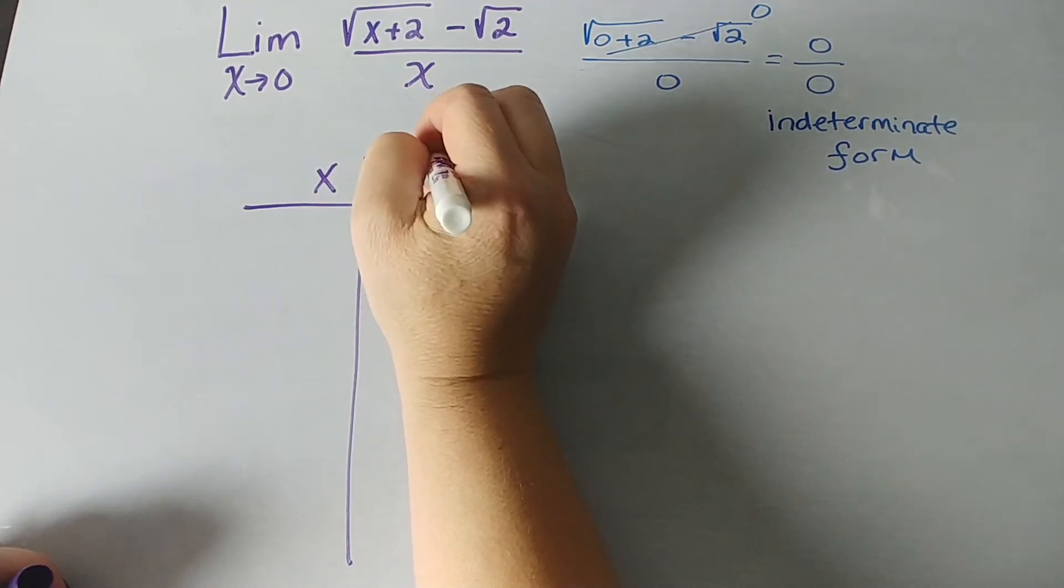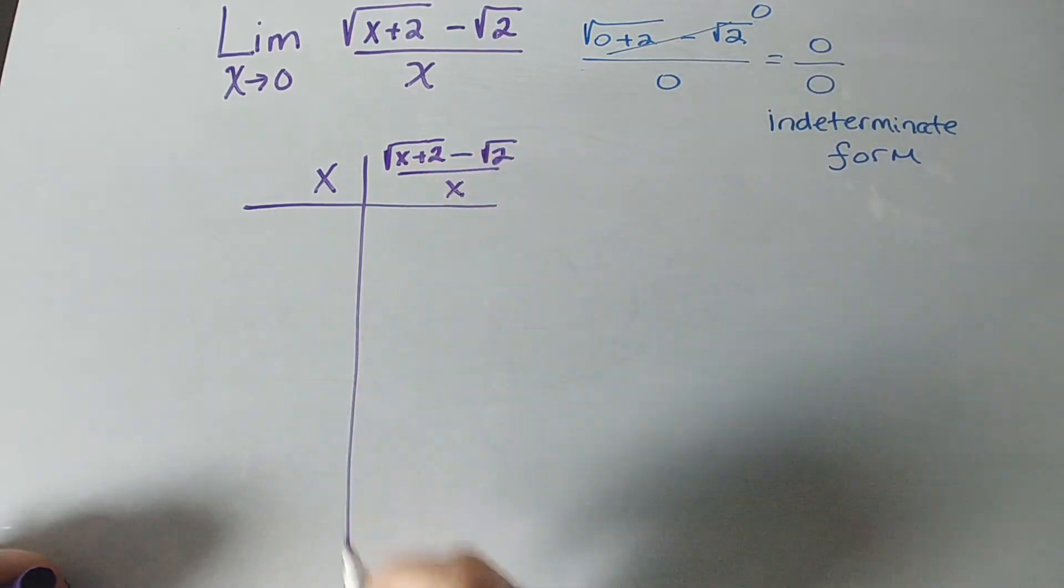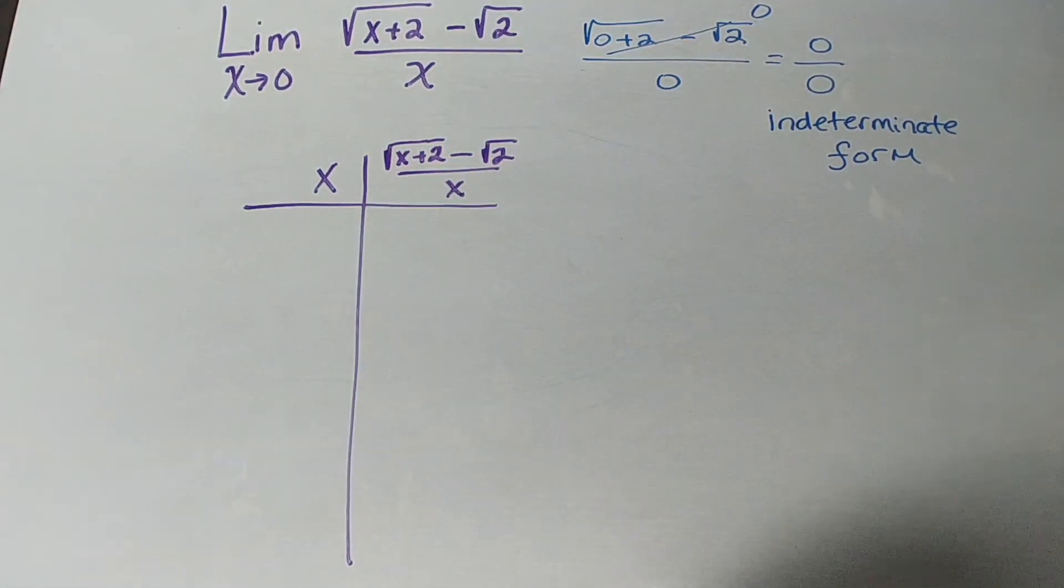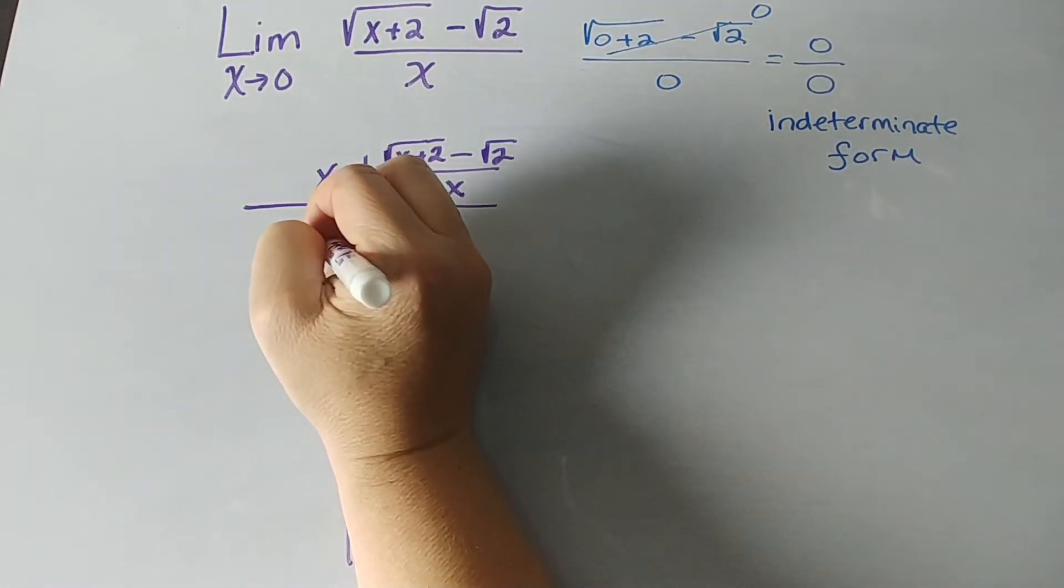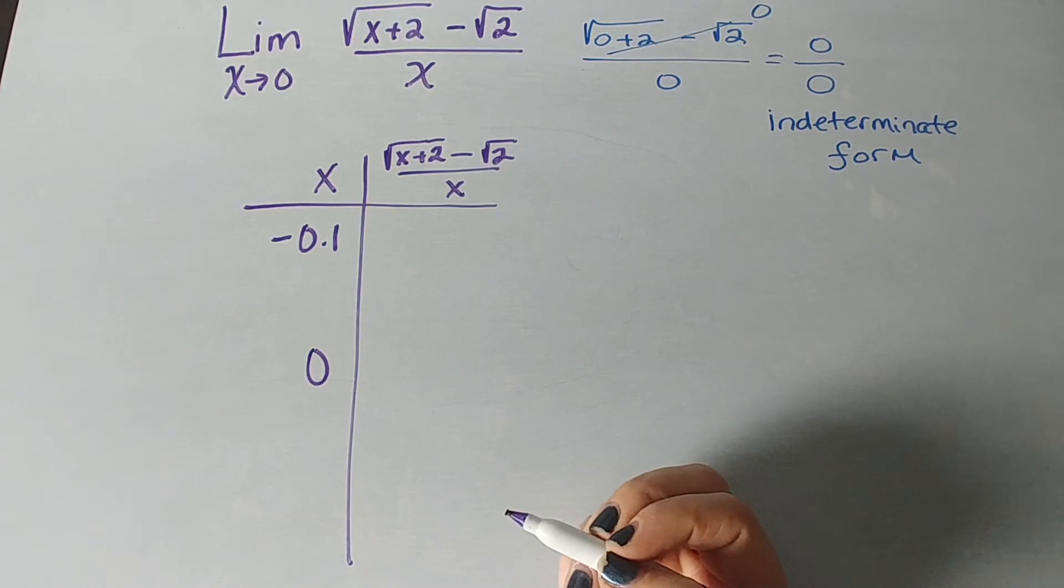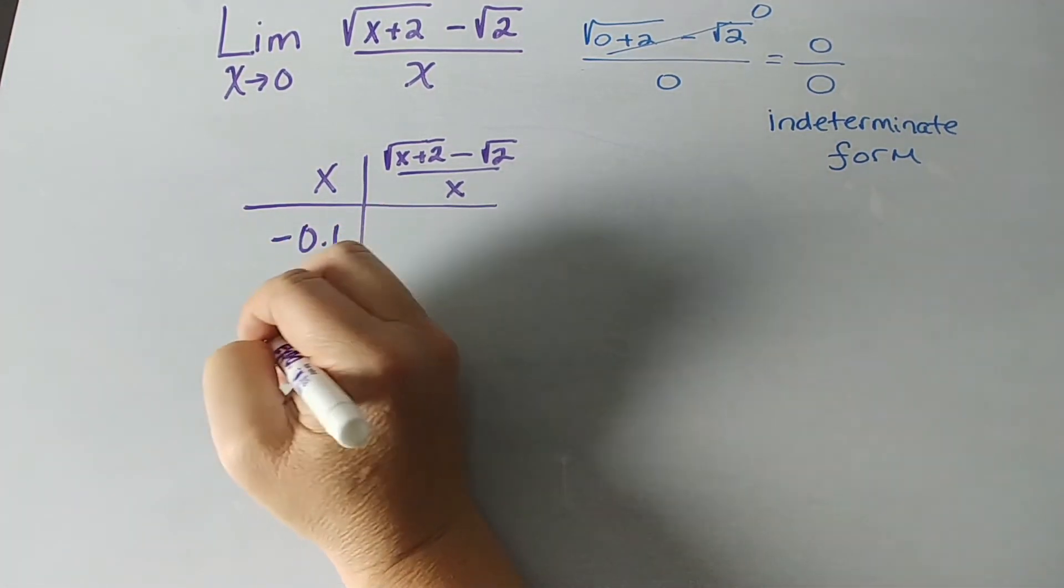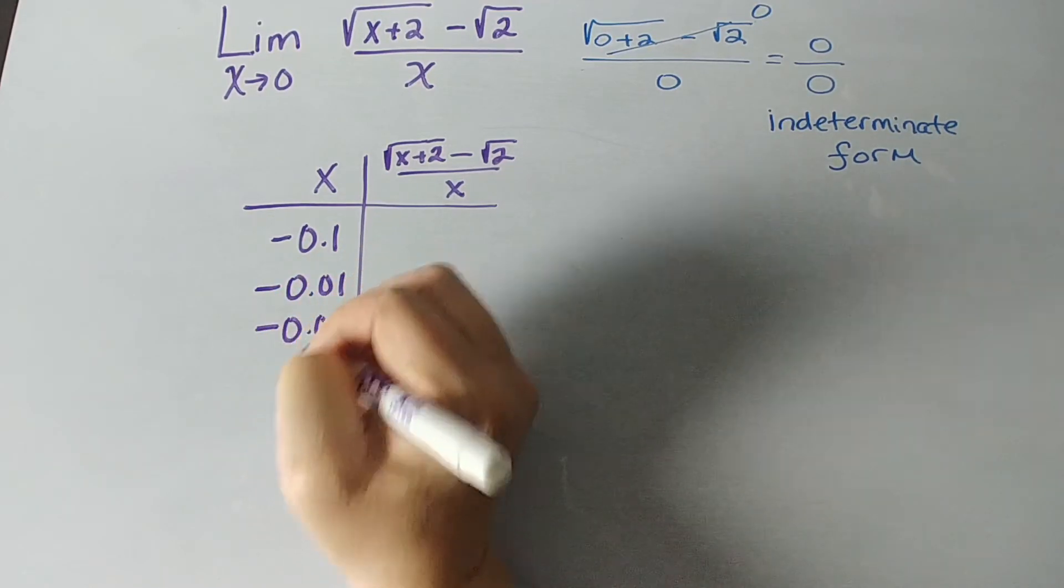So, let's see. We've got some x values. We're going to put the function over here, the x plus 2 minus, oops, square root, all over x. And I'm going to use a handy-dandy calculator to go ahead and calculate these values. But what you want to do is approaching 0 from the left. So, coming in, you want values less than 0. So, negative 0.1, negative 0.01, negative 0.001.